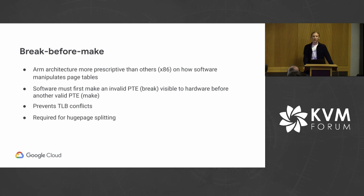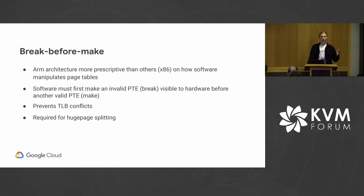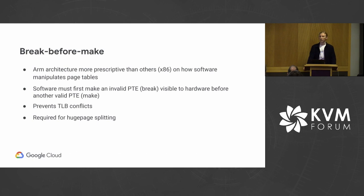Break before make: the ARM architecture is extremely prescriptive about how software can manipulate page tables, unlike x86 where it's a bit more free. Under certain conditions, software must first invalidate a PTE — clearing it and making sure it's visible to hardware — before installing a new visible PTE. In the case of a page split, we can't directly jump from a huge page down to a table; we have to go through an intermediate step of zeroing it and then invalidating the TLBs. This prevents TLB conflicts because at no point are two different values for the PTE visible to hardware. It is required for huge page splitting.